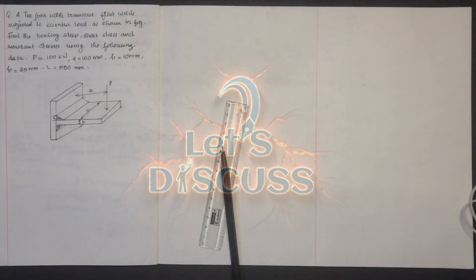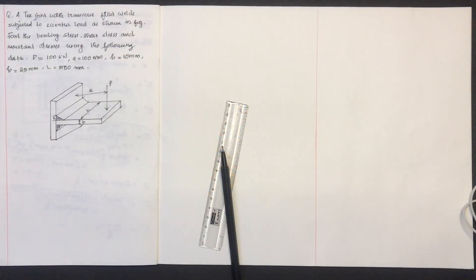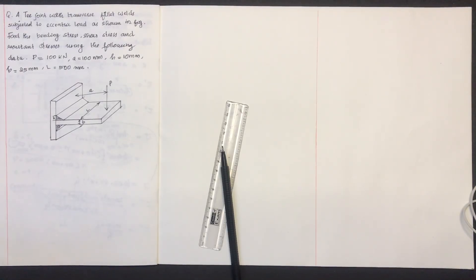We are going to be dealing with a transverse fillet weld joint subjected to eccentric loading. We need to find the bending stress, shear stress, and resultant stress using the following data.